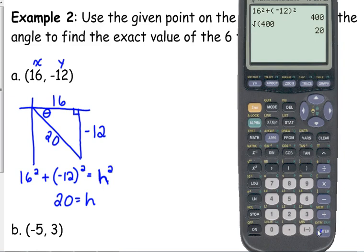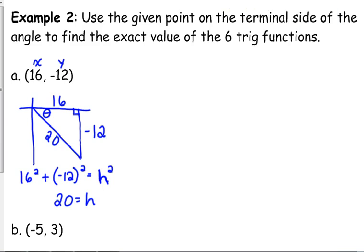The x or y, or the opposite and adjacent, they can be negative sometimes depending on what quadrant we're in, but your hypotenuse is always going to be positive. All right, so let's go through our trig functions here.